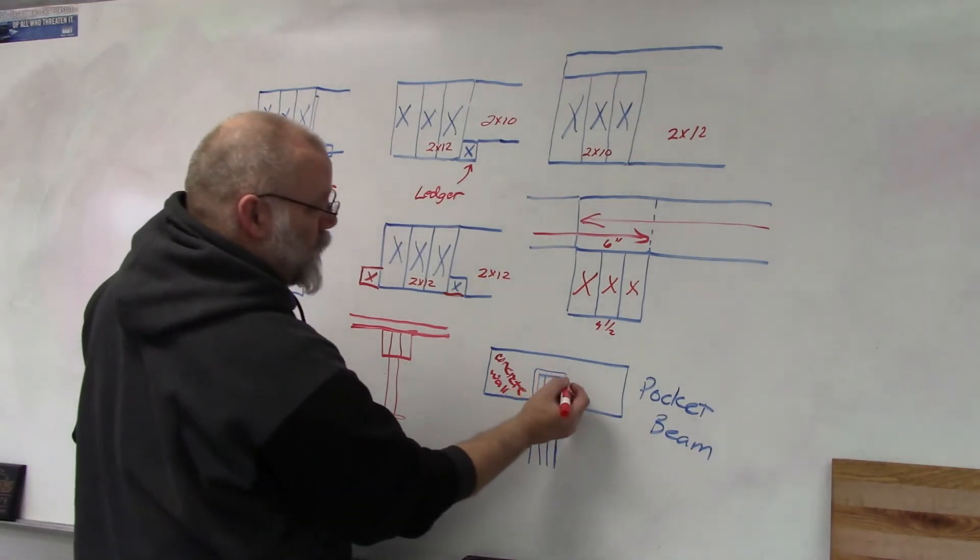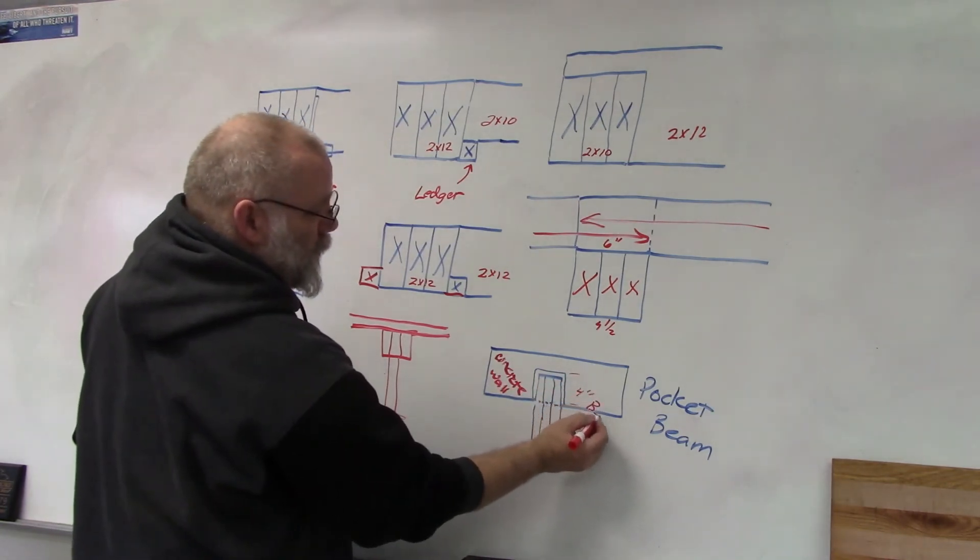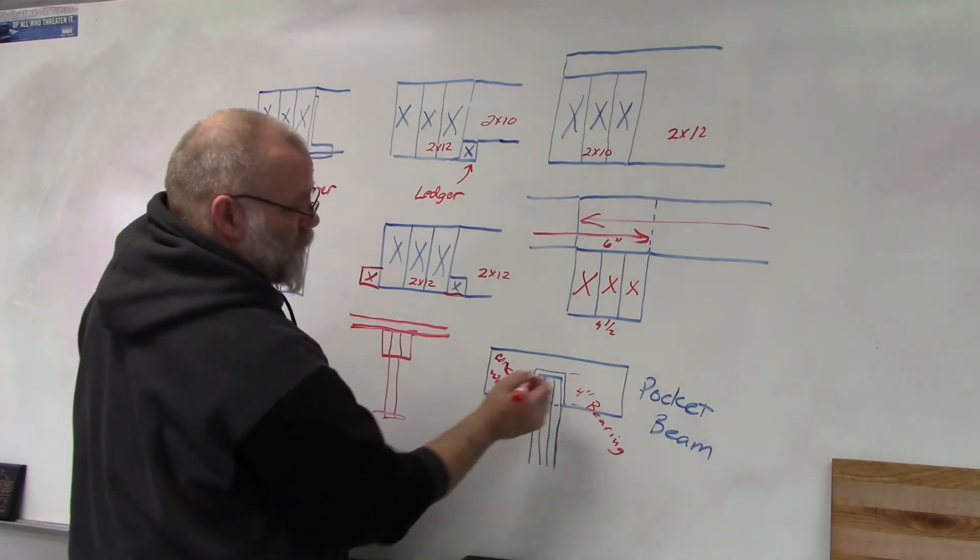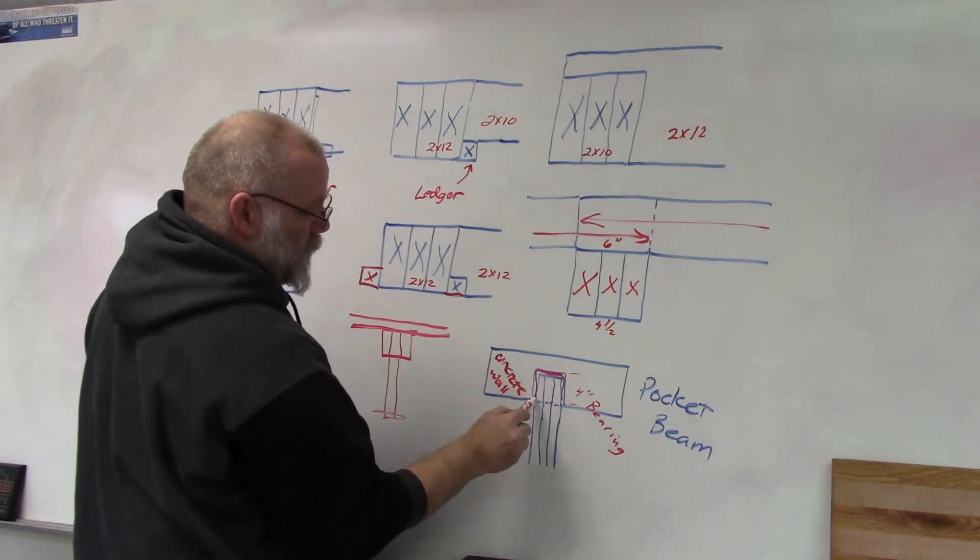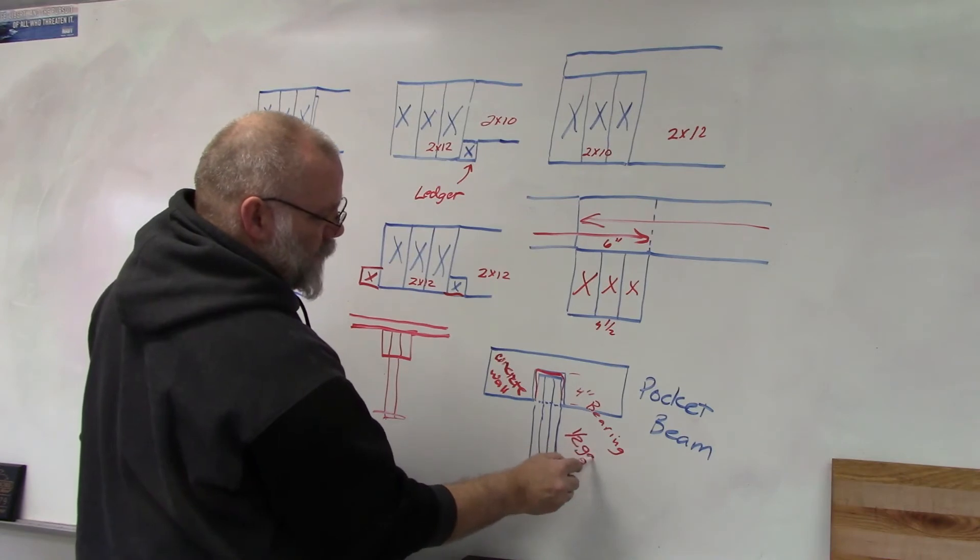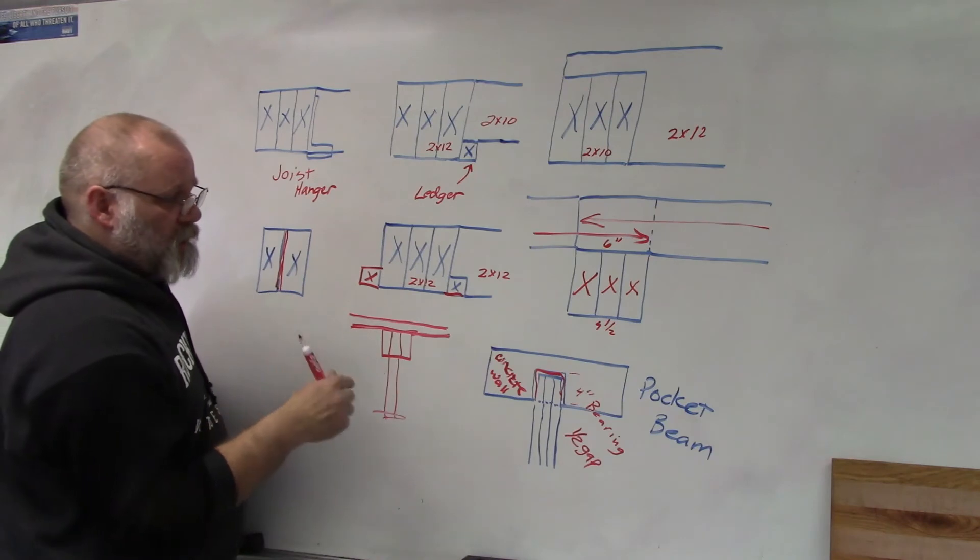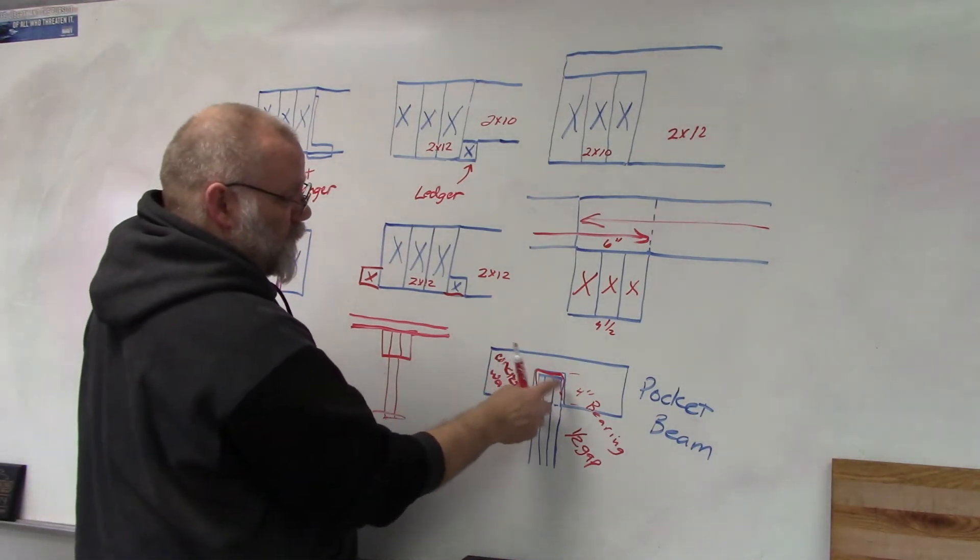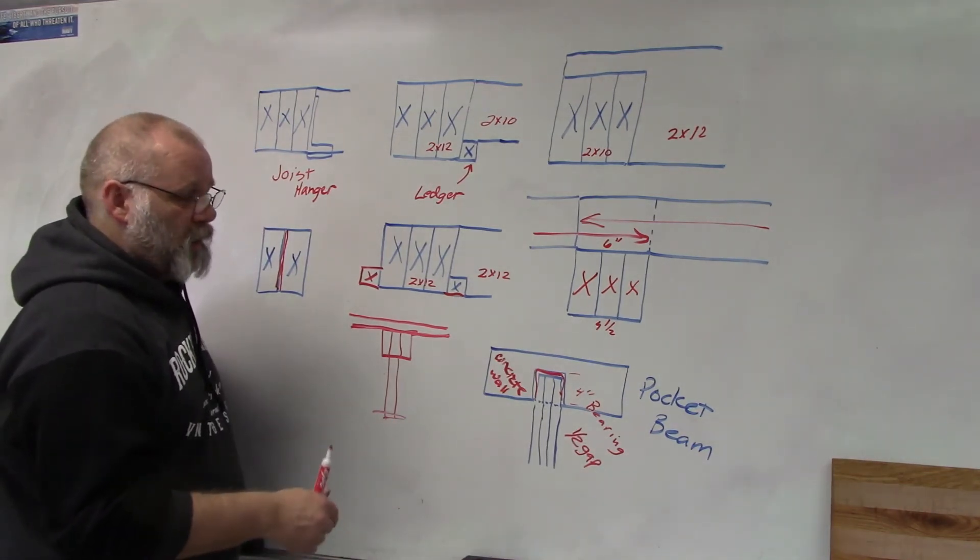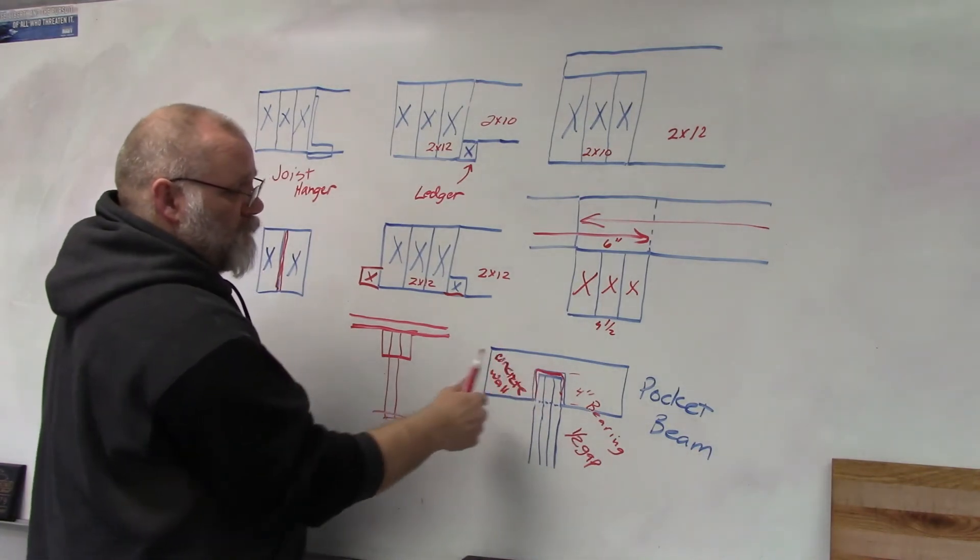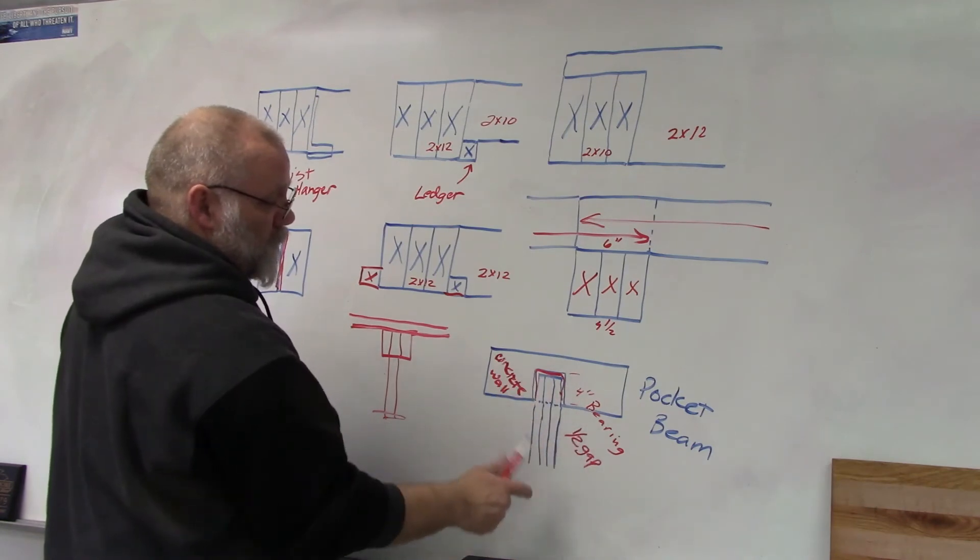So a couple things you need to know about this. Number one, it needs to have about four inches of bearing, that means it has to sit on the wall at least four inches in. Number two, it has to have an air space around it, so it has a half inch gap on all three sides so that air can get in there and circulate around it and it won't hopefully rot that end out sitting on top of that concrete. Because concrete is porous, it does allow water to get in there, so you have to be able to get the humidity out of there. If you have a little air gap around there then hopefully the air will circulate and get rid of any moisture.